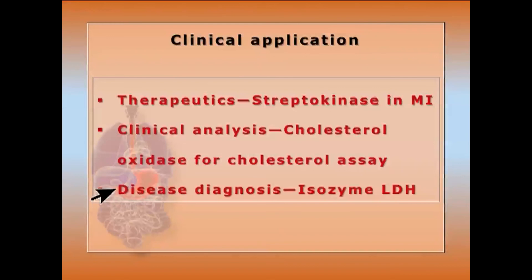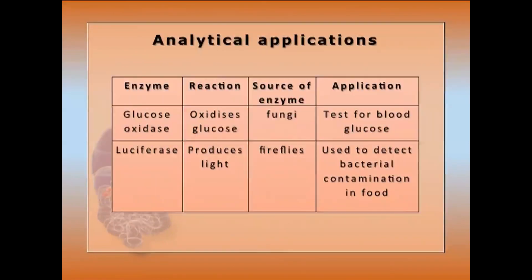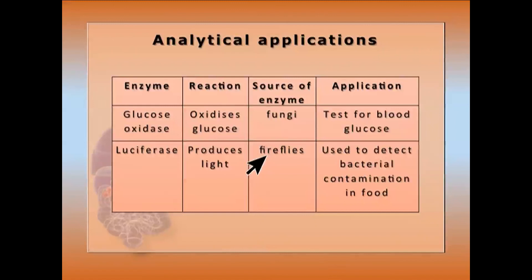Disease diagnosis uses the marker-specific isozyme of lactate dehydrogenase M4, which is not normally found in blood serum but is present in cases of myocardial infarction. Analytical application: glucose oxidase from fungi oxidizes glucose to gluconic acid and is used in purified kit form for blood glucose testing. Luciferase from fireflies produces light and can detect minute amounts of bacterial contamination in food.